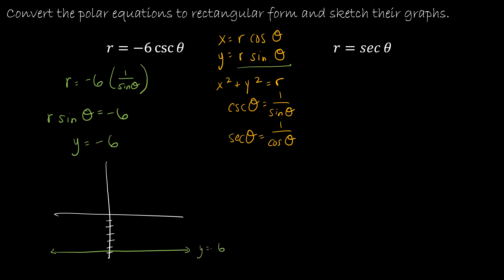Same thing for this second example, r equals secant theta. I'm going to replace secant theta with 1 over cosine theta. So this is 1 over cosine theta, which means r cosine theta is equal to 1. I'm going to replace r cosine theta with x. So I have x equals 1.